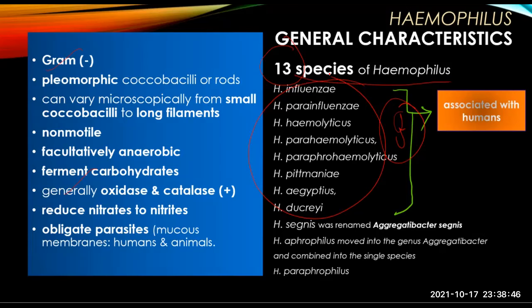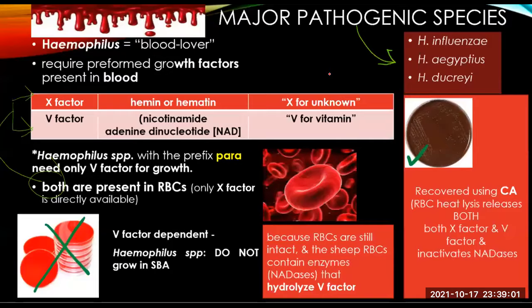Haemophilus segnis was renamed Aggregatibacter segnis, and H. aphrophilus moved into the genus Aggregatibacter. The major pathogenic species — noting that the majority of the genus Haemophilus members are non-pathogenic — include Haemophilus influenzae, Aegyptius, and Ducreyi. The name Haemophilus is derived from the Greek word meaning 'blood lover,' implying that Haemophilus organisms require growth factors present in blood.